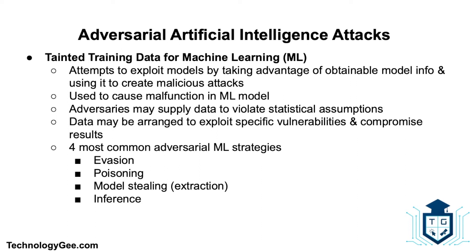Let's talk about tainted training data for machine learning. Adversarial machine learning is a technique that attempts to exploit models by taking advantage of obtainable model information and using it to create malicious attacks. The most common reason is to cause a malfunction in a machine learning model. Most machine learning techniques were designed to work on specific problem sets in which the training and test data are generated from the same statistical distribution. When those models are applied to the real world, adversaries may supply data that violates the statistical assumption — this data may be arranged to exploit specific vulnerabilities and compromise the results.